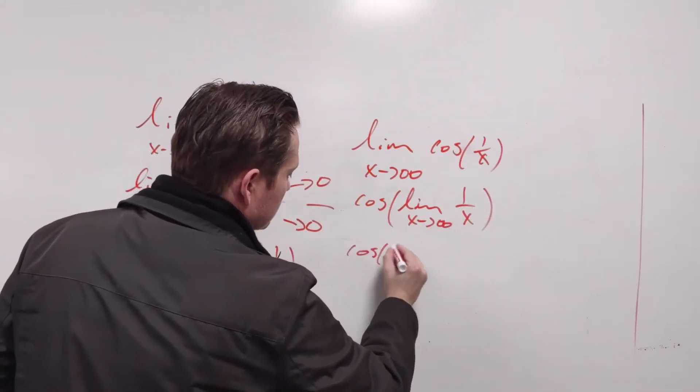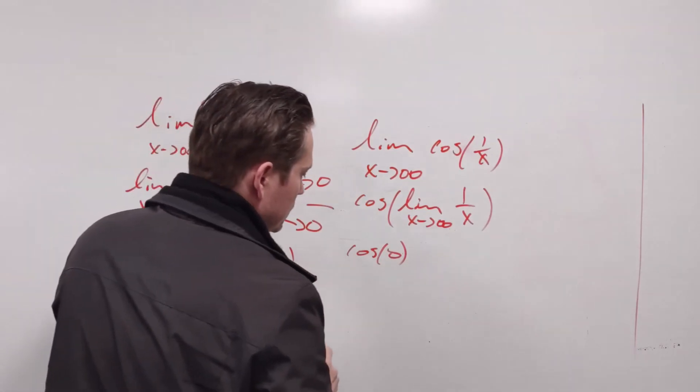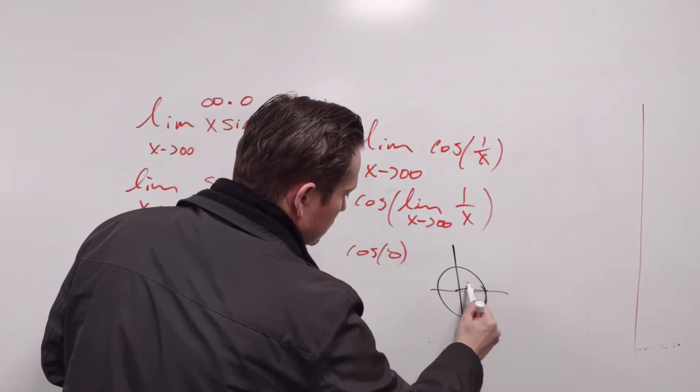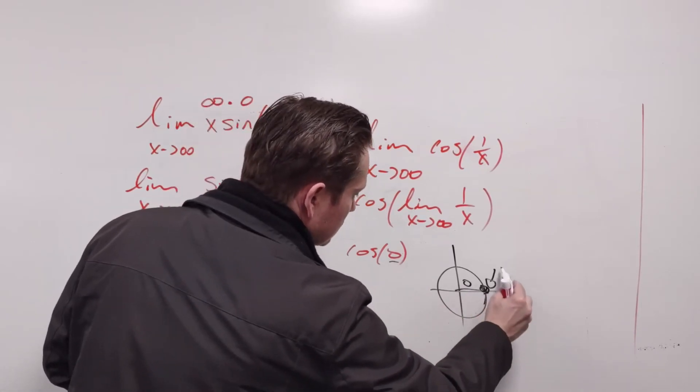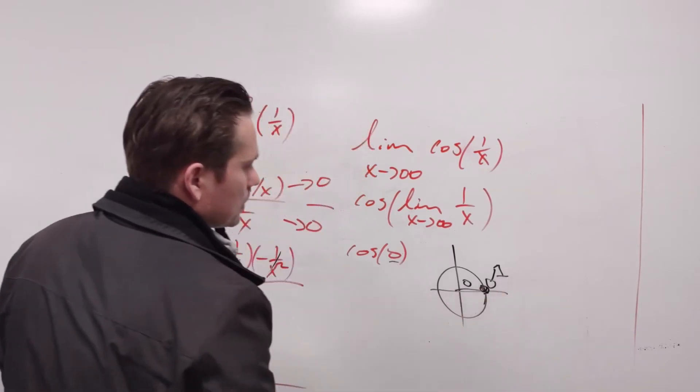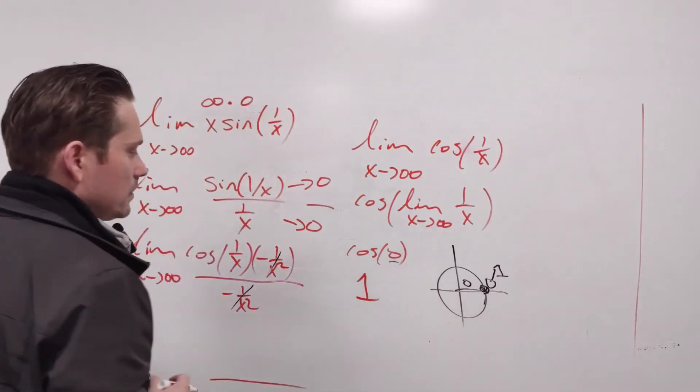So you have cosine of 0. And then recall from the unit circle, when you're at 0 radians, which is what this value is, then the x-coordinate is the value of the cosine that's equal to 1, which means the final output is 1, and that's the value of the limit.